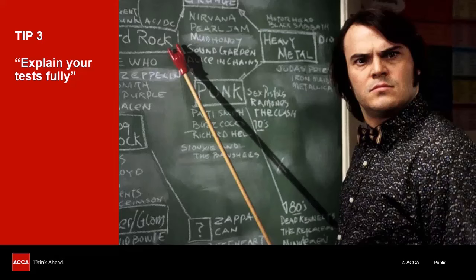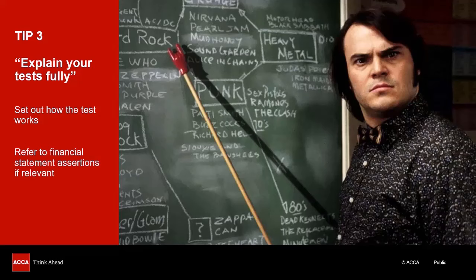My third tip — this is how you turn your half mark into a full mark. You must explain each test fully. If you've only written six words for an audit test, it is not going to score a full mark. You must set out how the test works with a bit of detail, explaining how it works and why you're doing it. Something I try to do where relevant is refer to the financial statement assertions — things like completeness, accuracy, occurrence, or valuation. I don't do that for every test, but where relevant, such as around the accuracy of a number, it encourages the marker to give me a full mark.